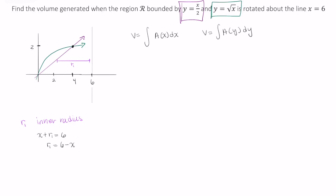Now what is x in this case? We're looking at this line, and we can rewrite this. Instead of writing it as y equals x over 2, we can rewrite this as x equals 2y. So that means our first radius is equal to 6 minus 2y.